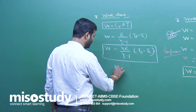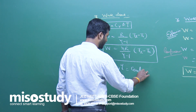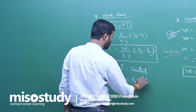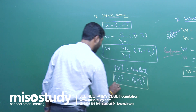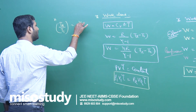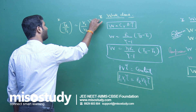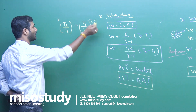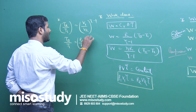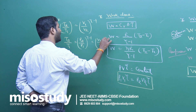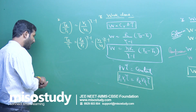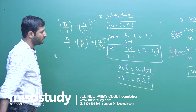In adiabatic processes, P·V^gamma equals constant, giving us P1·V1^gamma equals P2·V2^gamma. The temperature-volume relation is T2/T1 equals (V1/V2)^(gamma minus 1), and the temperature-pressure relation is T2/T1 equals (P2/P1)^((gamma minus 1)/gamma).